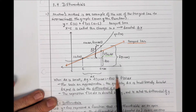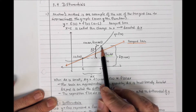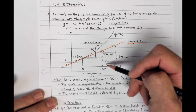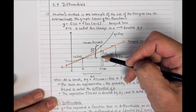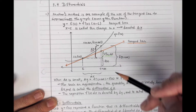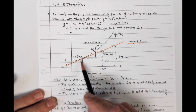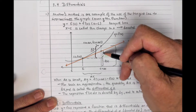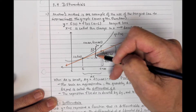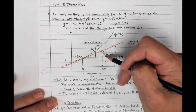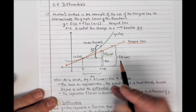If this point is (C, F(C)), then C is the X value and F(C) is the Y value. That Y value plus delta Y gives us the new Y on the curve. What I want to do is approximate delta Y given delta X using the tangent line. This amount here — which we're going to call F prime of C times delta X — comes from the tangent line.